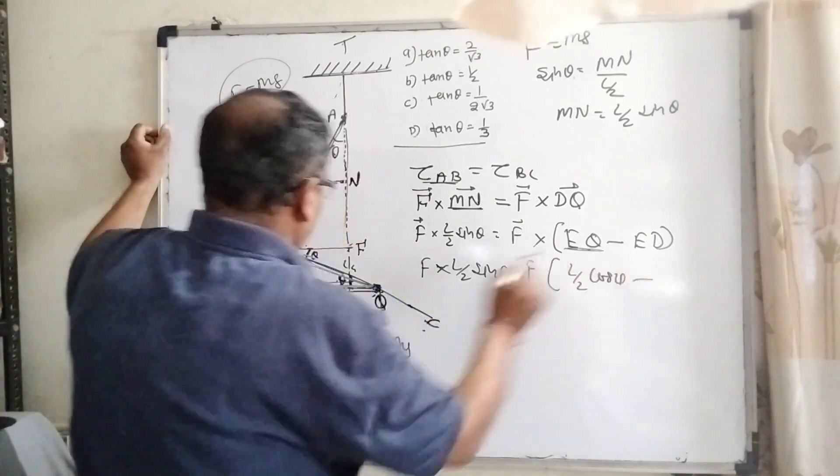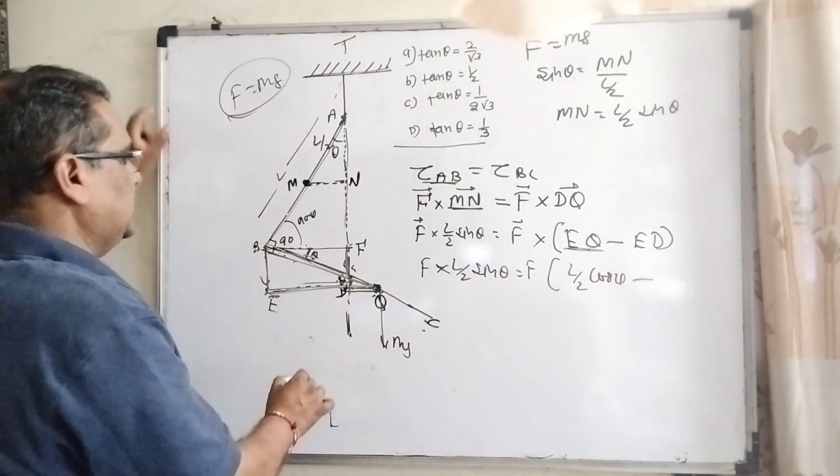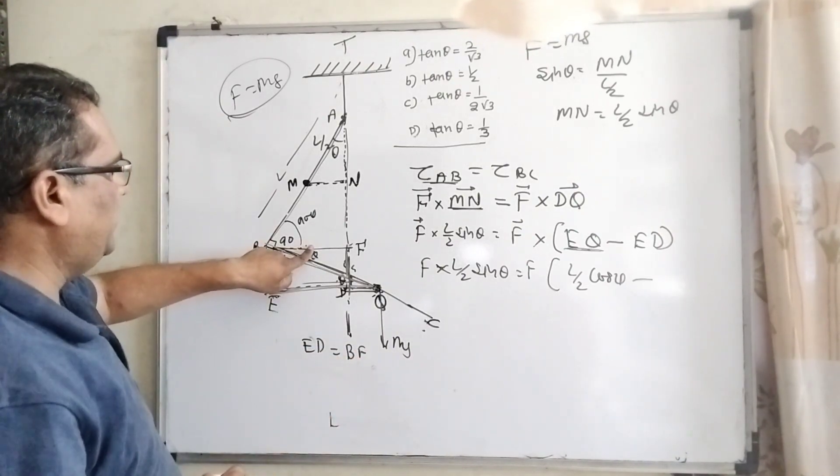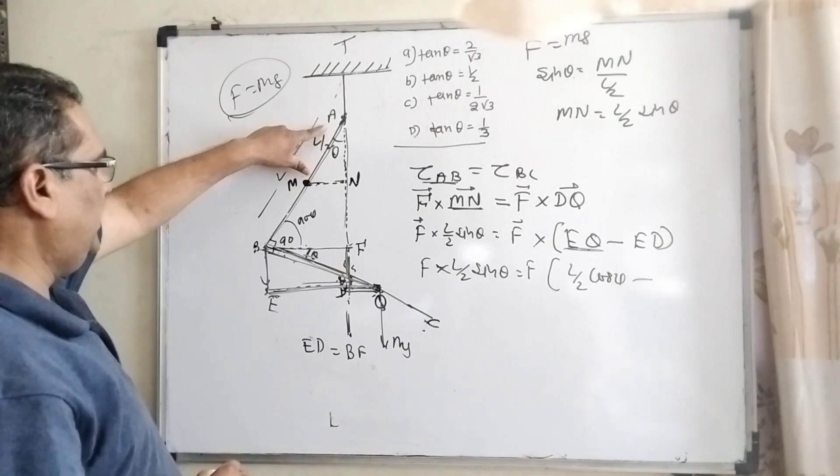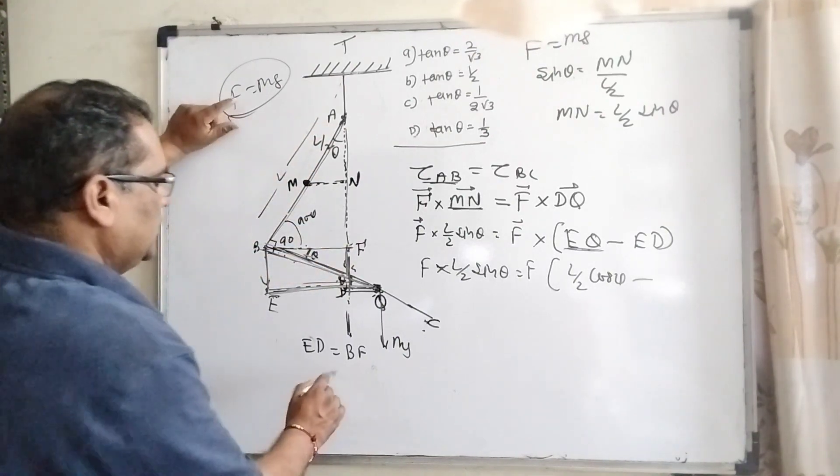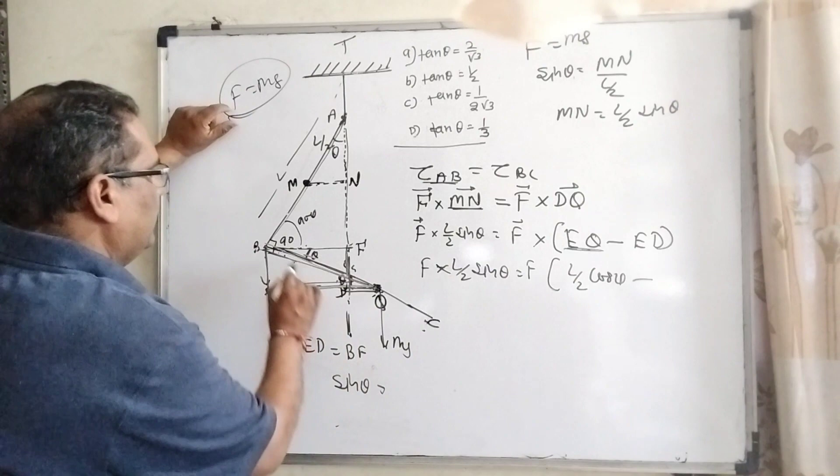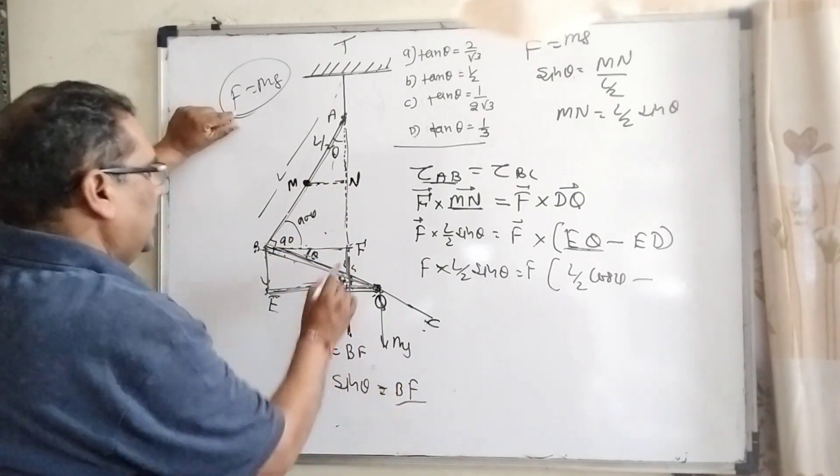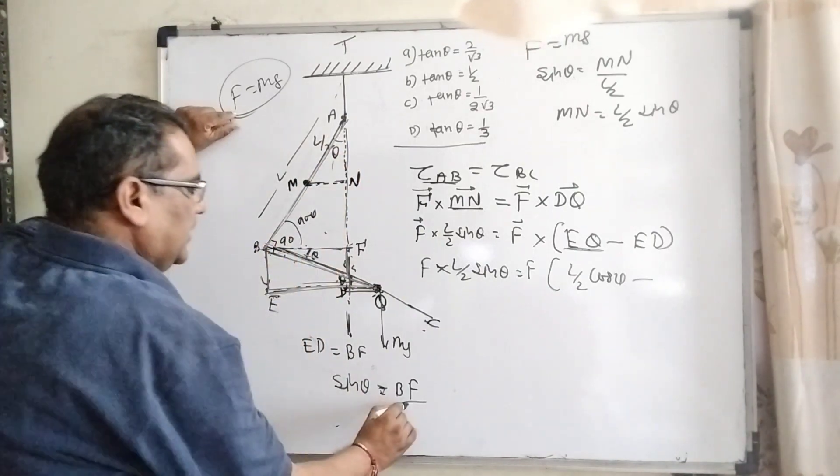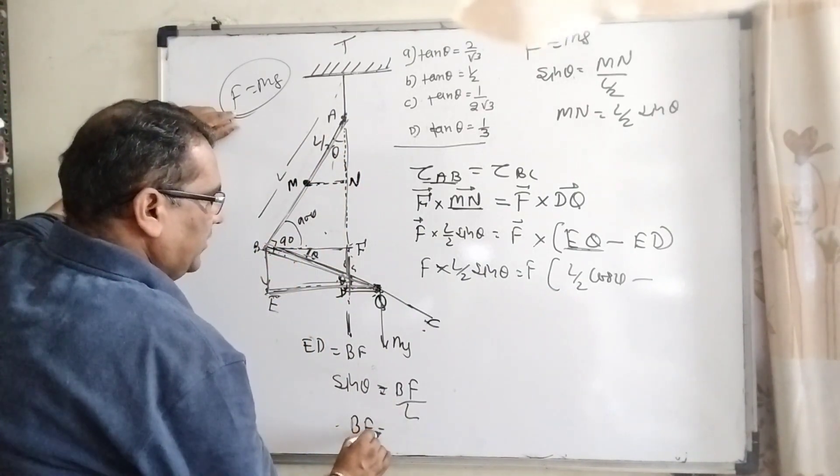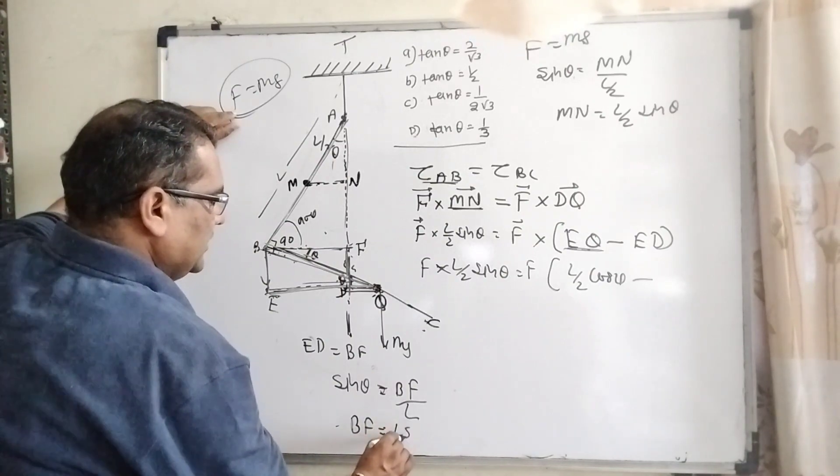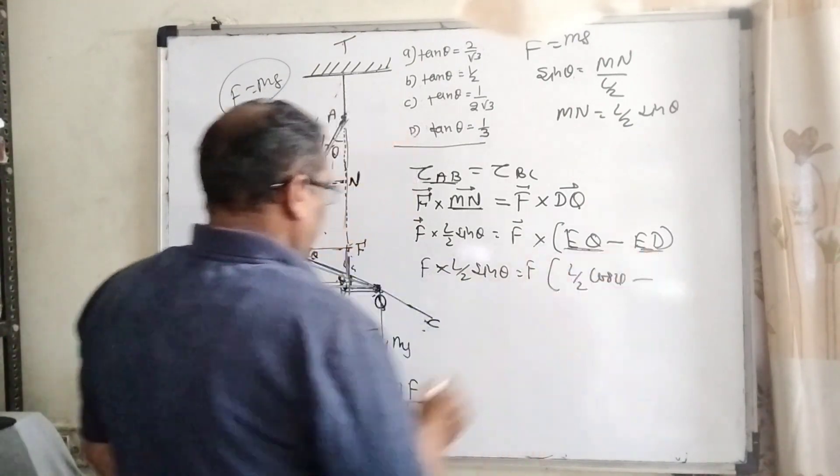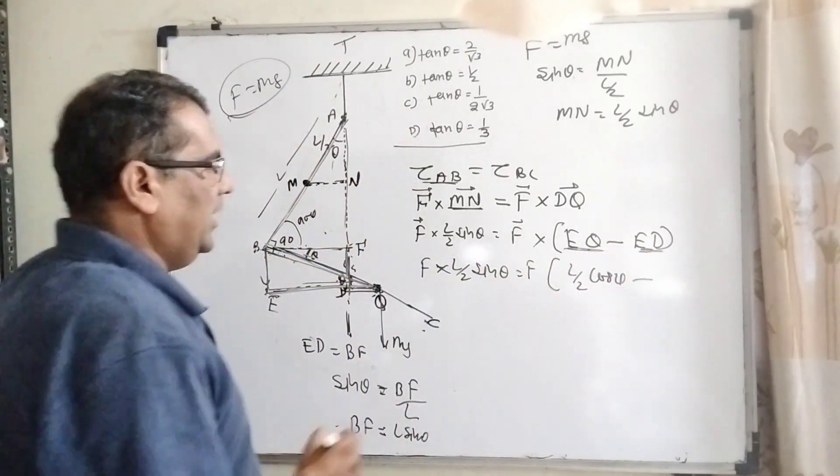For ED, for the ED you can see that it is the parallel distance means ED equal to BF. So now for find out BF you can take the triangle ABF. So sin theta equal to this perpendicular opposite side BF and hypotenuse means total length L. Then BF can be written as L sin theta and BF equal to ED. So in the place of ED it can be written as DF and in the place of DF can be written as L sin theta.